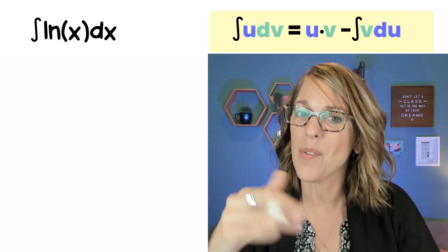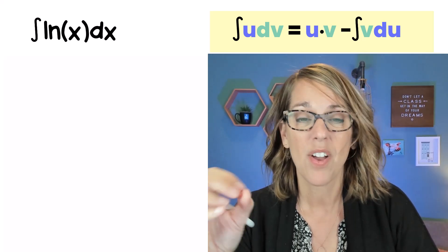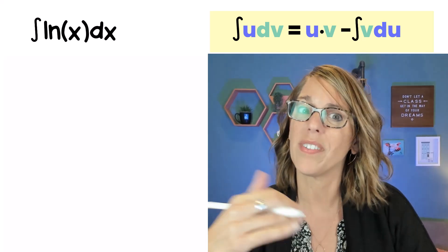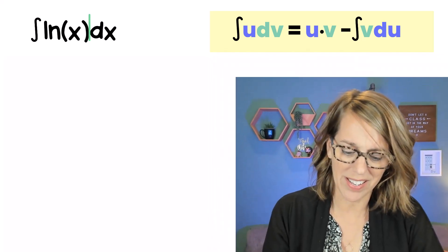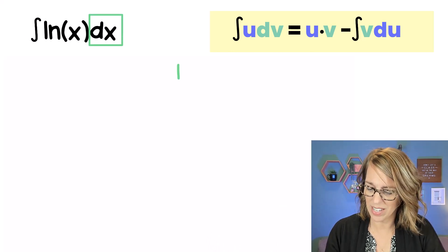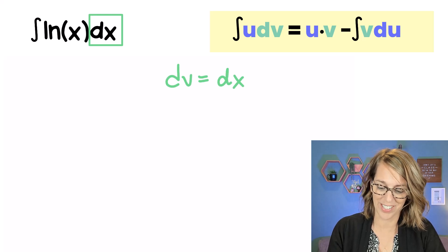Now this one feels a lot different because I only have a single function, that natural log of x that's been multiplied. Well, one of these has to be the u, and the other one has to be the dv. So dv has to be that dx. So I'm just going to let dv equal dx, and we're going to trust the process.